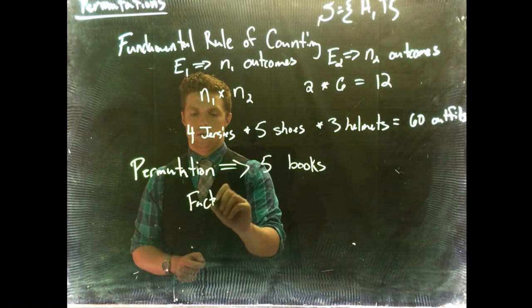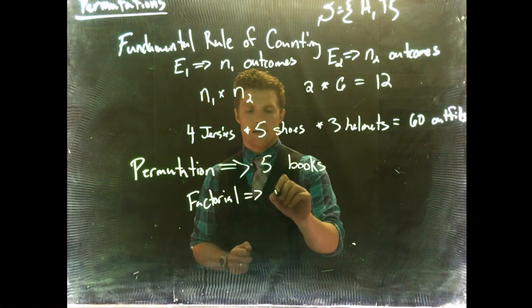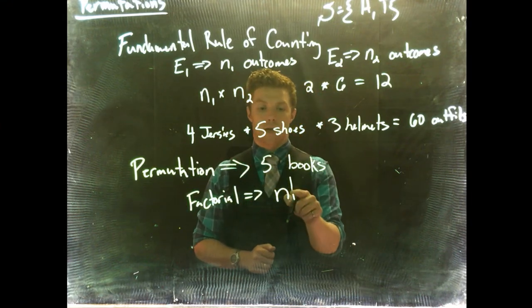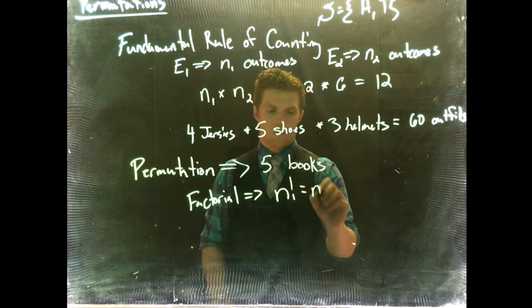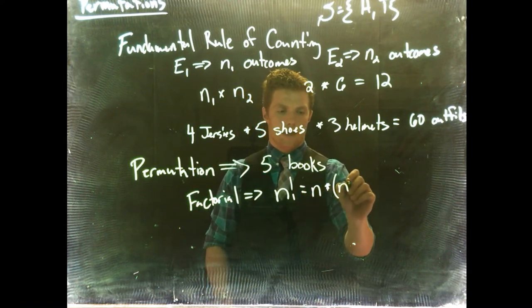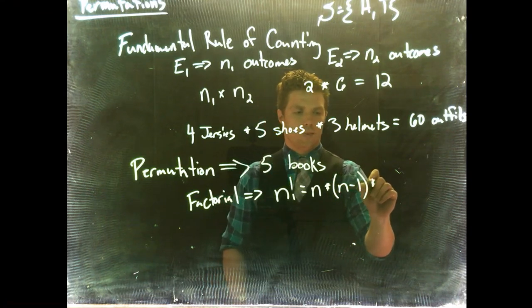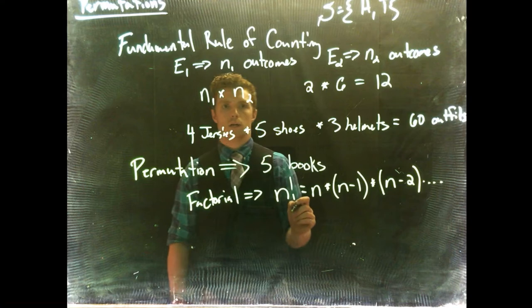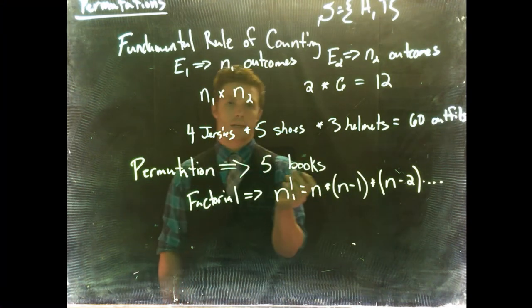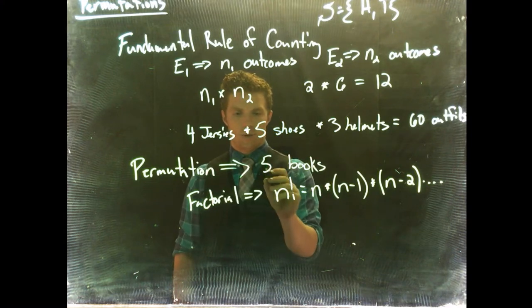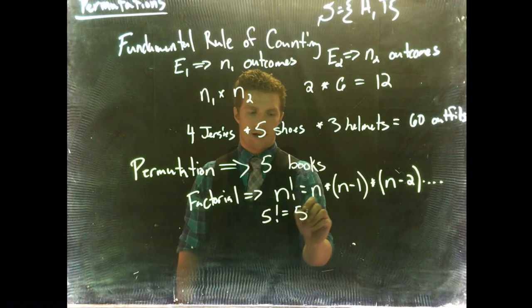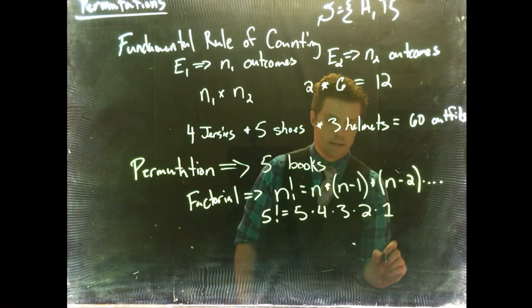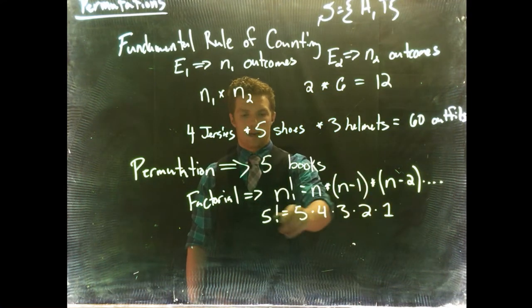And we can use what are called factorials. If we want to use a factorial, this is what it looks like. You take N factorial. This would be the total number of objects that we have, our outcomes, or total number of objects that we have. And we do a factorial. And that is equal to N multiplied by N minus one multiplied by N minus two. And we keep on going and going and so forth until we get down to zero. So we can say that doing five books, five factorial would equal to five times four times three times two times one. So we stop at one.